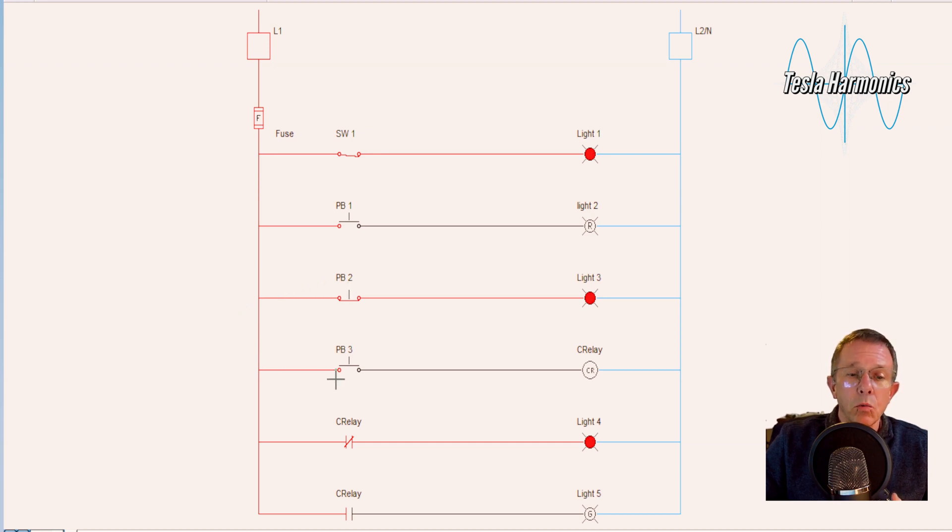Coming down one more rung, I just put in a normally open push button to control our control relay. When we energize the coil on it, it will open this normally closed contact and turn off this red light. At the same time, it will close this normally open contact and turn on this green light.